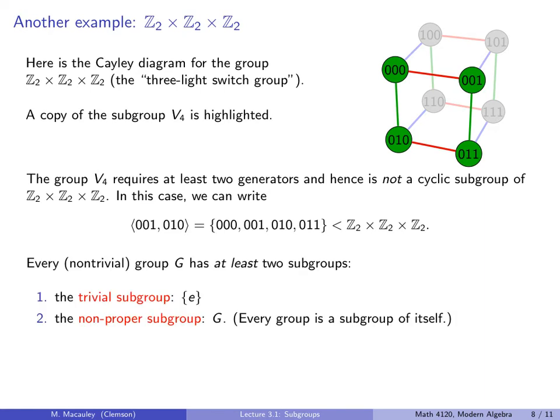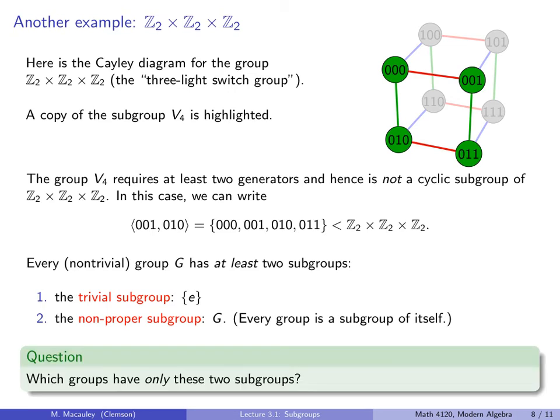So every non-trivial group G, by non-trivial I mean G contains more than just the identity element, has at least two subgroups. So it always contains the trivial subgroup of just the identity and also the non-proper subgroup G. That is every group is trivially a subgroup of itself. So let me ask you a question. Which groups have only these two subgroups? We'll come back to it shortly.